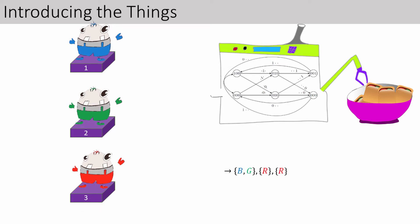So for example, if the blue and green things scream on the first step, and then the red thing screams on the second and third steps, then the arbiter gets the input 1, 2 on the first step, then 3 and again 3. So it grants blue a food square on the first step, then grants no food squares on the second step since the green thing did not scream at the second step, and then grants red a food square on the third step.